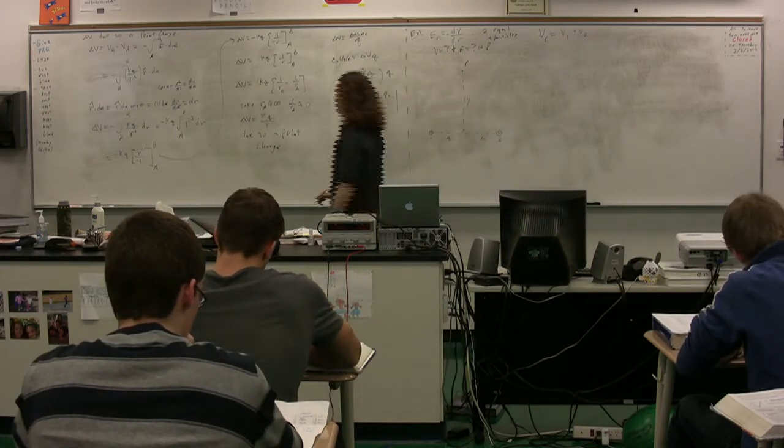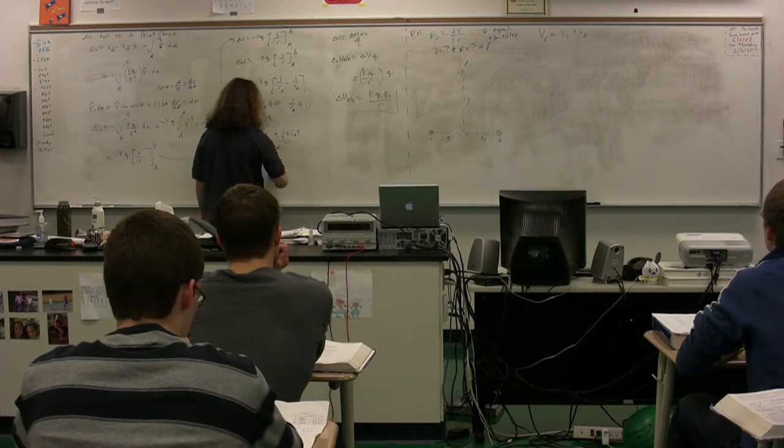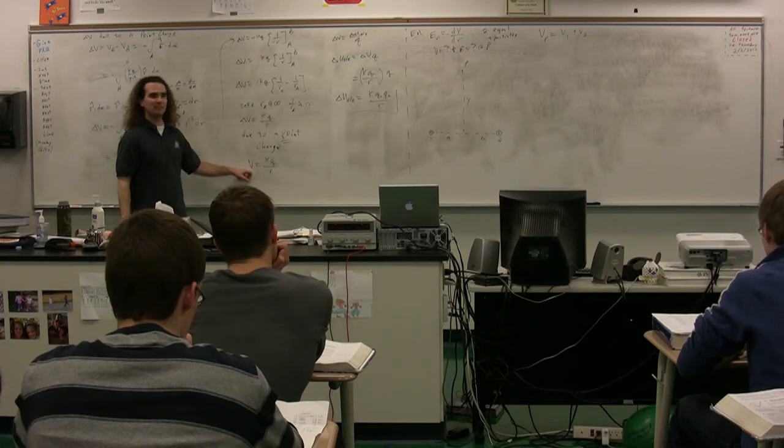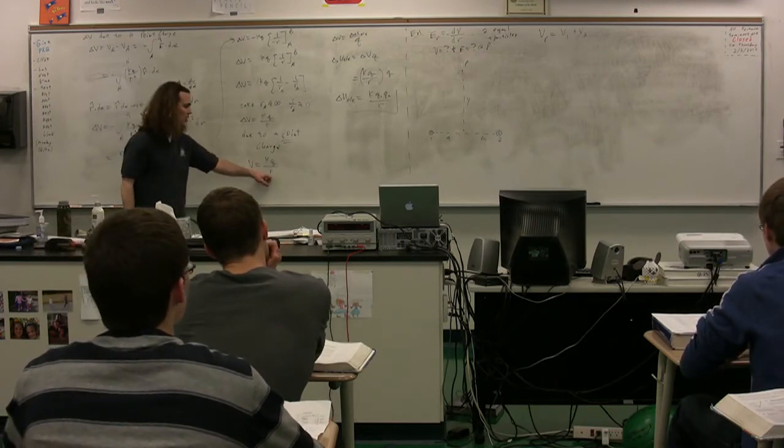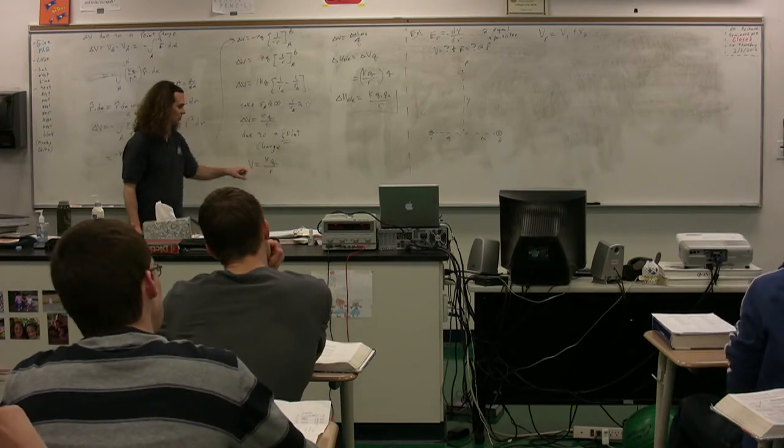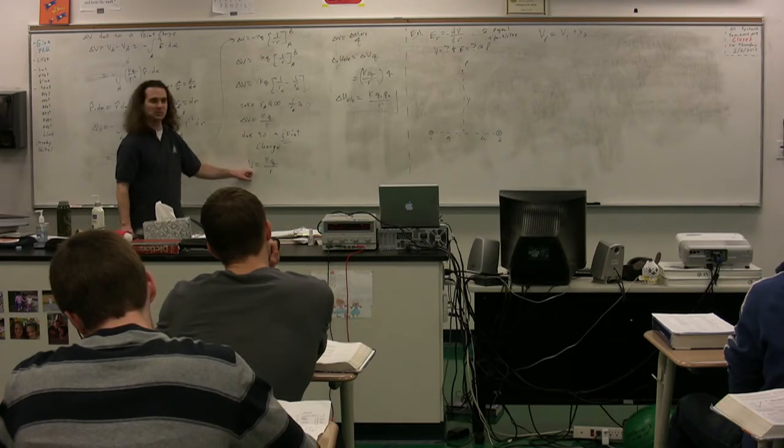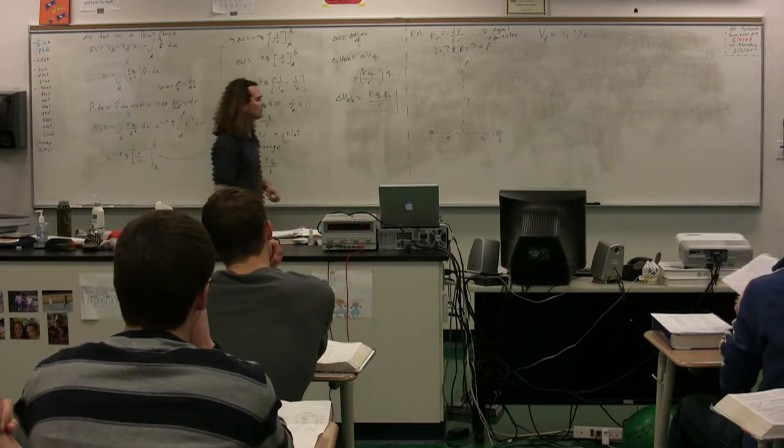Now, I do want to point out that a lot of times when you're talking about a point charge, you will simply see it as V is equal to KQ over R. That's because this is defined specifically as the electric potential difference between a point infinitely far away and a point R distance from the point charge. So that's specifically what this means. When they drop the delta, it specifically means the electric potential difference between infinitely far away and a point R distance from the point charge.